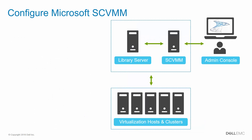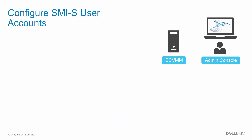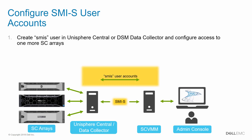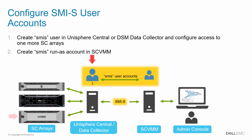Now that SMIS is enabled and we have verified the essential components of the SCVMM environment required to support SMIS integration, we'll need to configure SMIS user accounts for authentication. The first step is to create an SMIS user on the Unisphere Central server or DSM Data Collector and grant this user administrator access to one or more SC arrays. The second step is to create a matching RunAs SMIS user account on the SCVMM server.